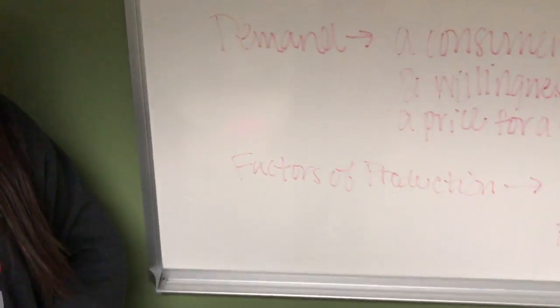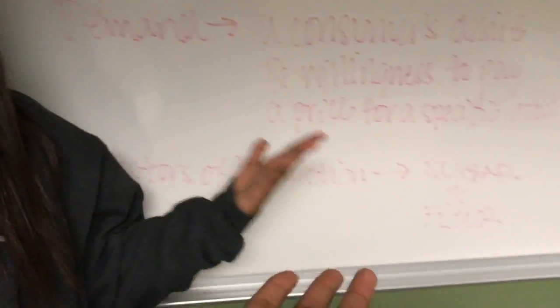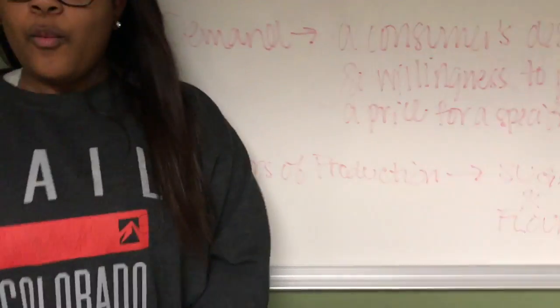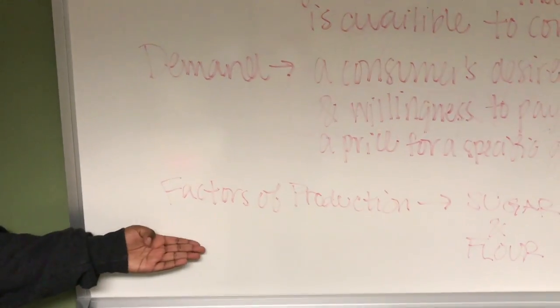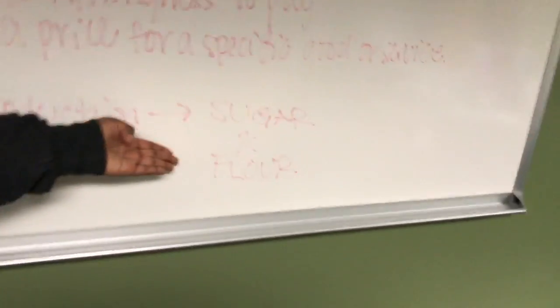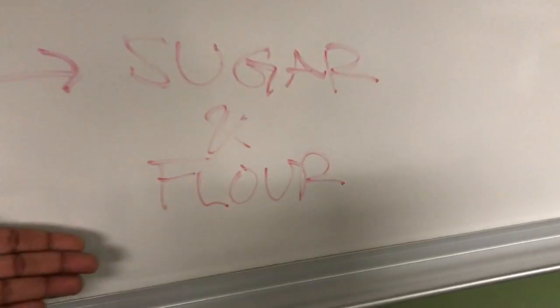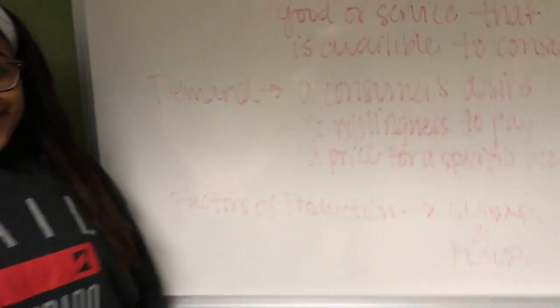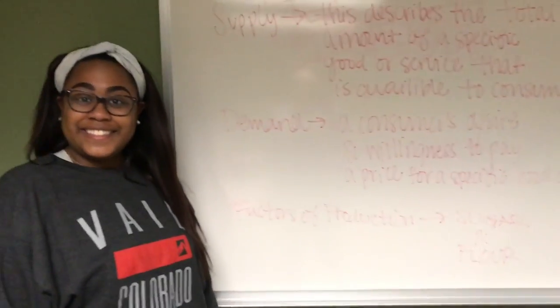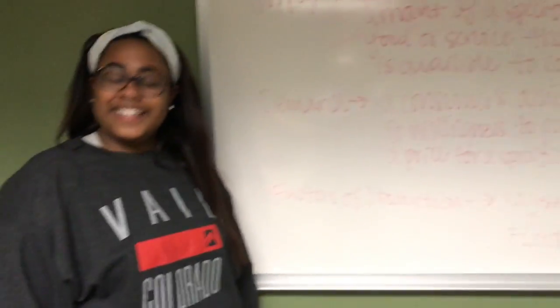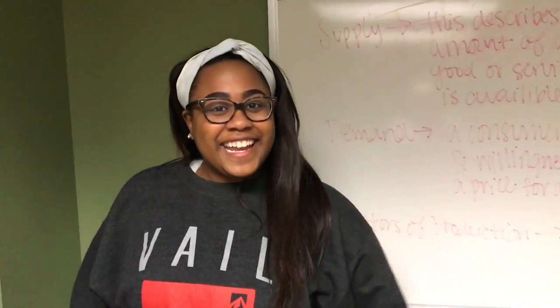And then what does this have to do with the cookies? What are factors of production? Well, as you can see, the factors of production for our cookies are the sugar and the flour. So if I'm understanding correctly, when the prices of the sugar and the flour go up, that means the prices of the cookies go up. Now you're getting it.